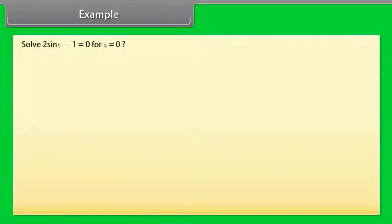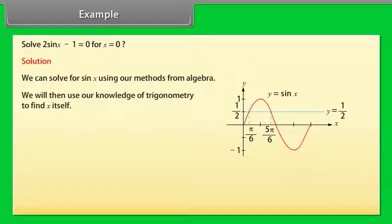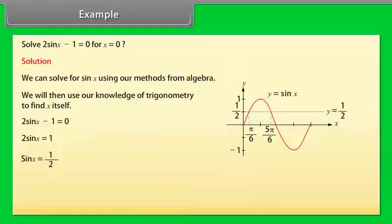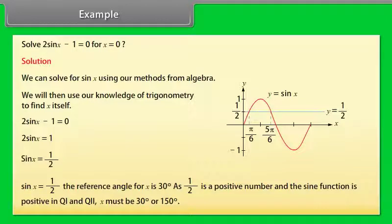Example: Solve 2sinx − 1 = 0. Solution: We solve for sinx using algebra, then use trigonometry to find x. 2sinx − 1 = 0, so 2sinx = 1, giving sinx = 1/2. The reference angle for x is 30°. Since 1/2 is positive and sine is positive in quadrants 1 and 2, x must be 30° or 150°.